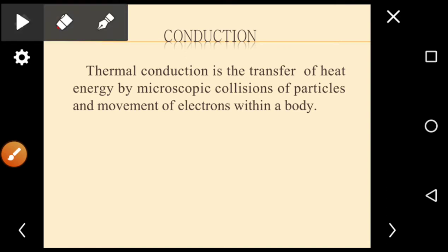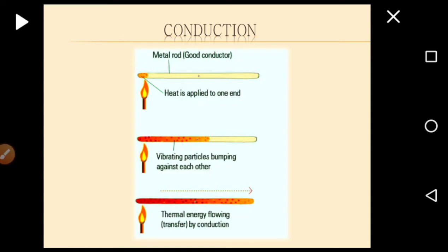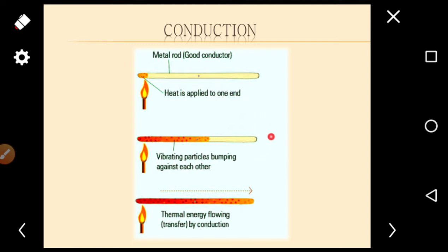Let me take an example. Consider a metal rod - it is a good conductor. At one end of the metal rod I am going to heat it. What happens? The heat is transferred throughout the conductor. If you hold the other end, you will feel the heat because it is transferred from one end to the other by conduction. The particles within the metal start vibrating and collide with neighboring molecules, so heat flows from one end to the other.